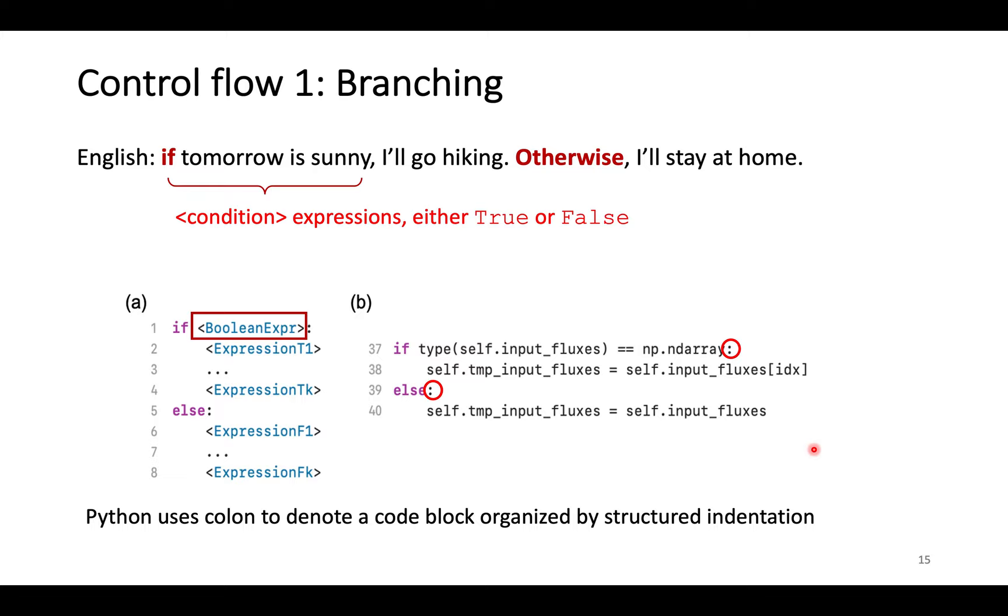Branching is also called an if-else control flow. For example, if tomorrow is sunny, I'll go hiking. Here, if sunny is a condition expression with boolean values. If the condition expression signifies true, a set of expressions will be executed. Here is go hiking.